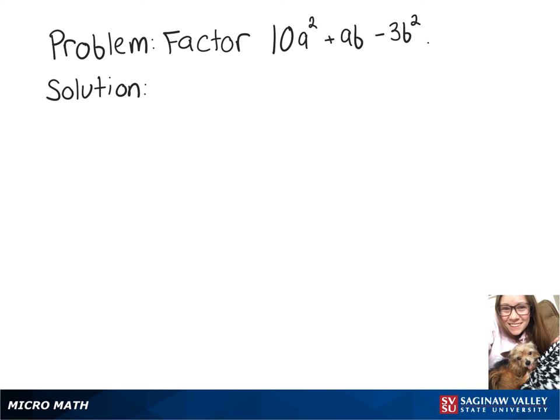We're going to factor 10a squared plus ab minus 3b squared. So to start, we'll just factor that 10a squared. So one possibility is having 10a times a. So we'll split it up in parentheses like this.